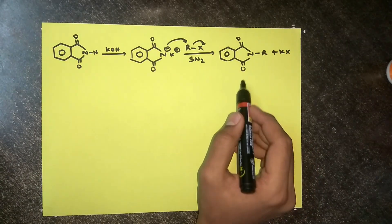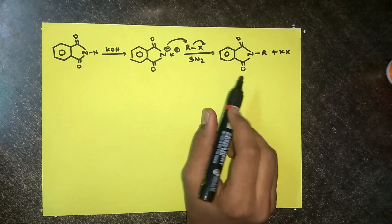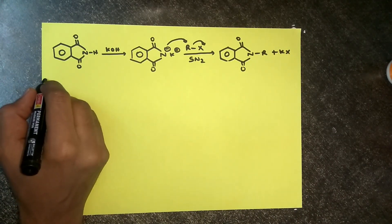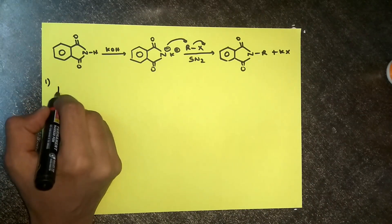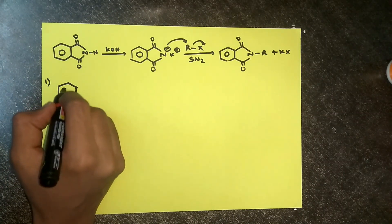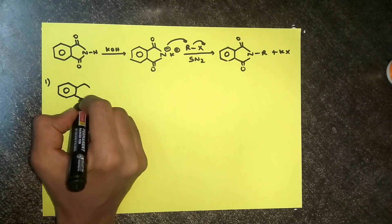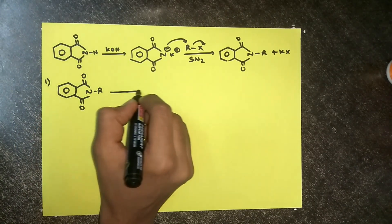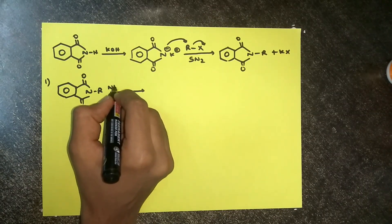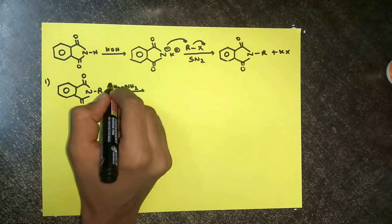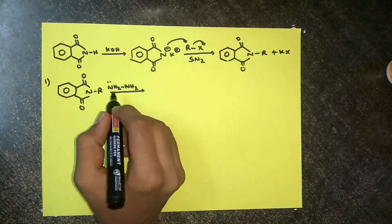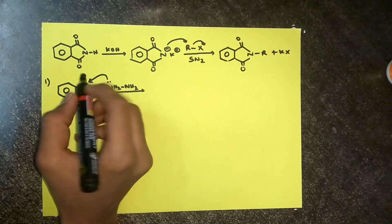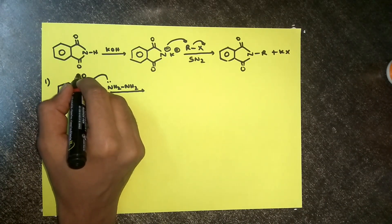Now the alkyl phthalimide formed here can be converted into amine in three ways. Let's look at the first one: reaction of alkyl phthalimide with hydrazine. As there is a lone pair on the nitrogen atom, this is going to act as a good nucleophile and attacks this electrophilic center, breaking this pi bond.